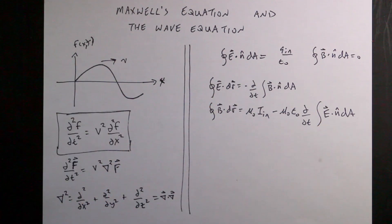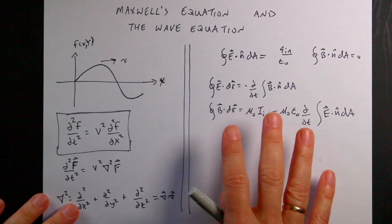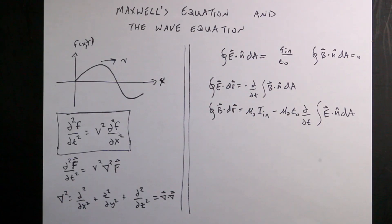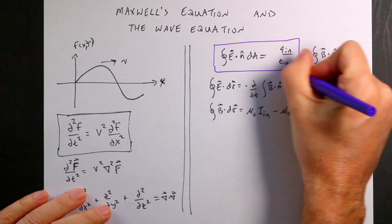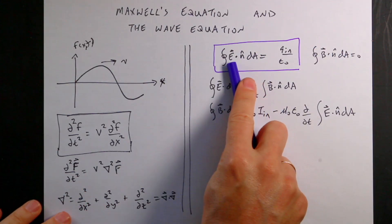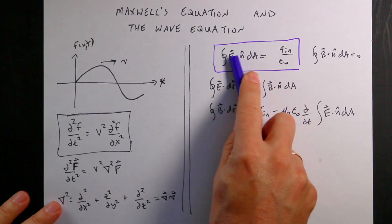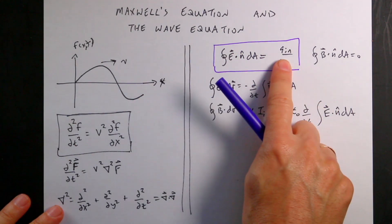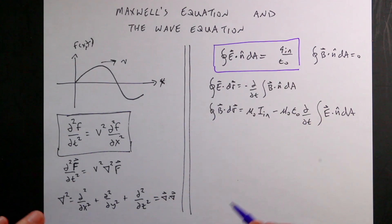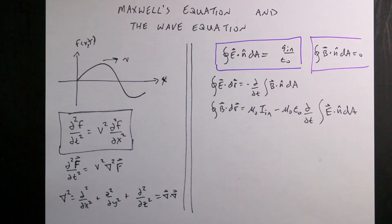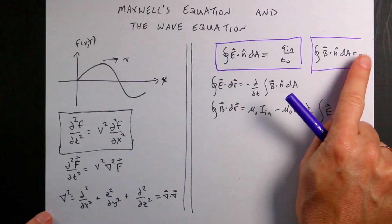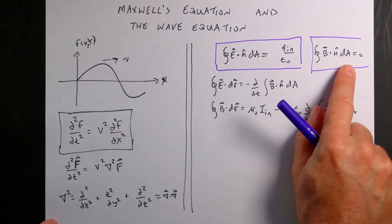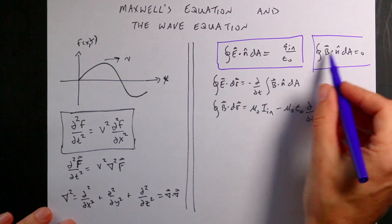Now let's go over to Maxwell's equations. These are the integral form of Maxwell's equations. Gauss's Law says that the electric flux through some closed surface — the flux of the electric field over that surface — is related to the total charge inside that surface. Gauss's Law for magnetism says the same thing, except there's no magnetic charge, so the magnetic flux over some closed surface equals zero.